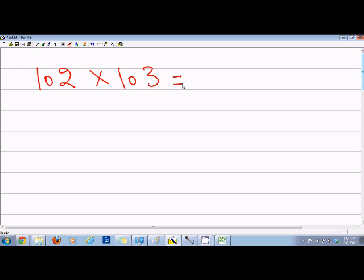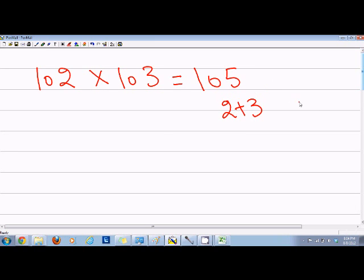What I'll do is add 2 plus 3 which equals 5, giving 105, and then multiply 2 and 3 which equals 6. So it's 10506. You can see this is the number by adding them, and this is the number by multiplying them.